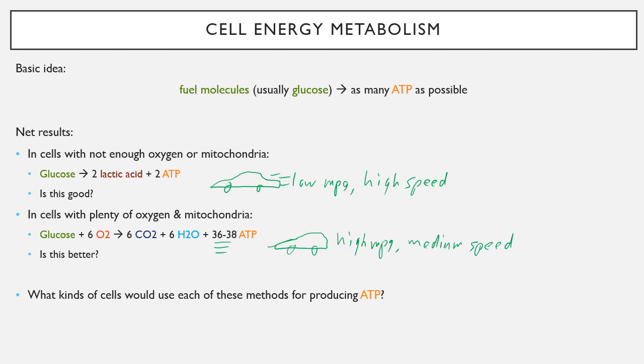What kinds of cells would use each of these methods? For cells with not enough oxygen, for anaerobic muscles, that's going to be pure glycolysis and lactic acid. The lactic acid method for anaerobic muscles. For virtually everyone else, your aerobic muscles, your nervous system that's constantly using energy, your heart muscle, they're going to want to use the oxidative method.